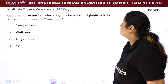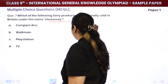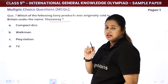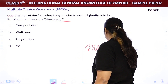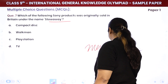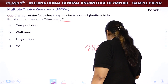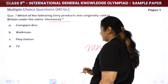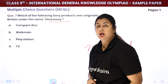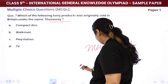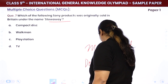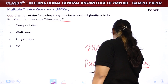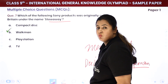Which Sony product was originally sold in Britain under the name Stowaway? Basically, this was the first product with a memory stick storage. It is very famous — our generation knows it well. It dates back to around 1999. The answer is the Walkman — your Walkman.